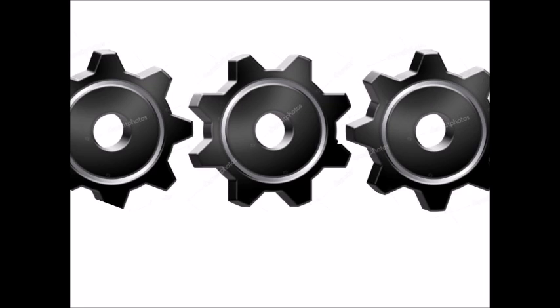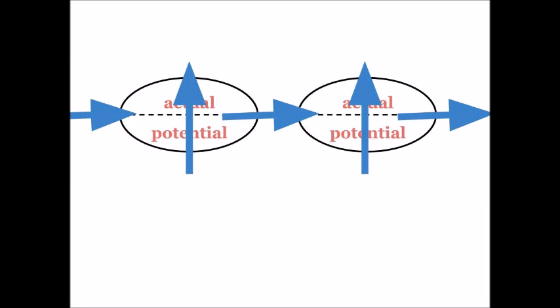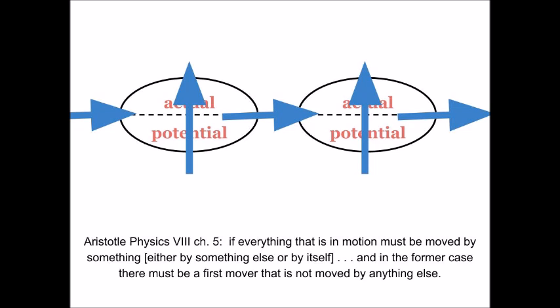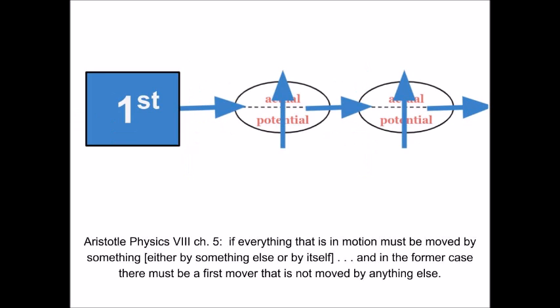Meaning that the gears, like the dominoes, can't go on forever. And you probably see where we're going with this. The unmoved first mover. If everything that is in motion must be moved by something, either by something else or moved by itself. So if everything in motion has to be moved by something, and in the former case, the one where you're moved by something else, there must be a first mover that is not moved by anything else, that is moved by itself. The unmoved first mover.